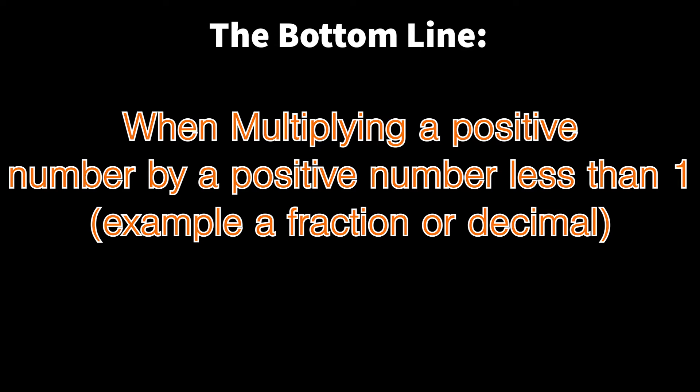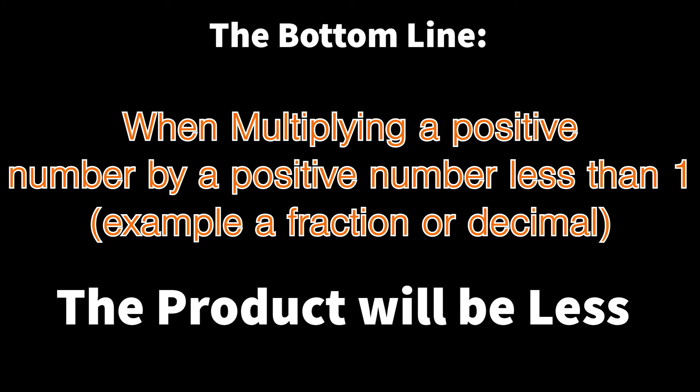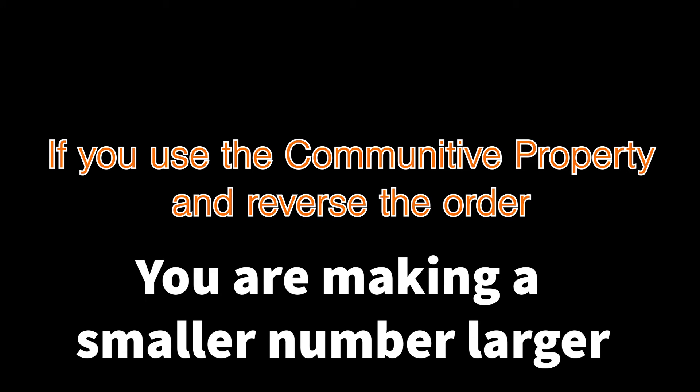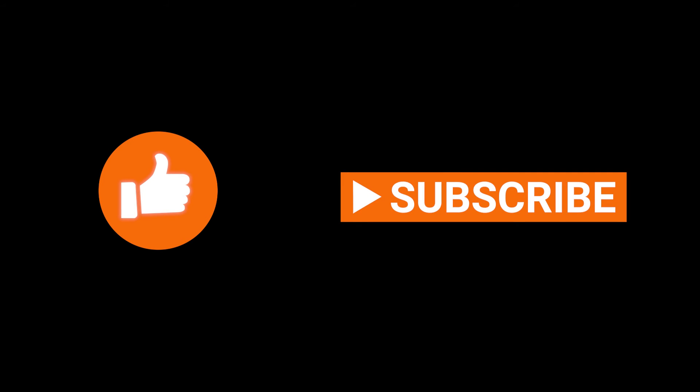The bottom line: when you multiply a positive number by a positive number that is less than 1 — like a fraction or decimal — the product will be less. Or we could use the commutative property and reverse the order of the numbers we're multiplying, so you're making a smaller number larger, which might be easier to make sense of it all. Hopefully this video was helpful — give it a thumbs up and subscribe to the channel. Until next time, we'll see you on the Land of Math.